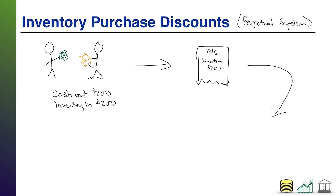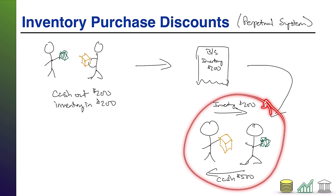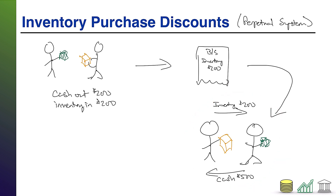Moving to the next step — here we are and we are now selling the inventory to a customer. Here's our customer with a whole bunch of cash to give us. Let's say we charge $500 for this inventory, and we have inventory going out. That inventory is only worth $200 on our balance sheet — we've marked it up, because as the merchandiser that's what we do: bring it in at one price, mark it up, sell it for a new price.